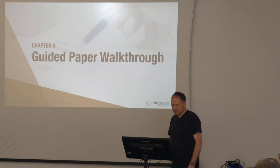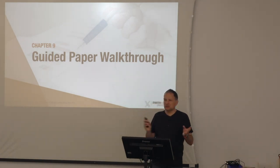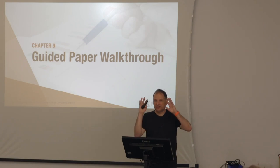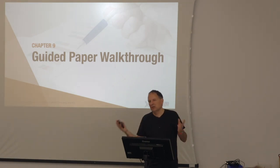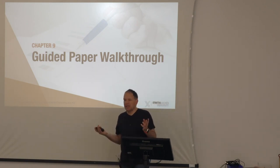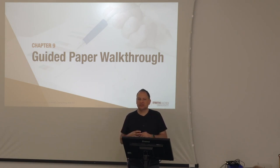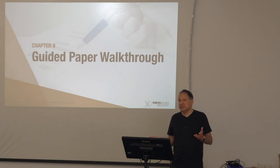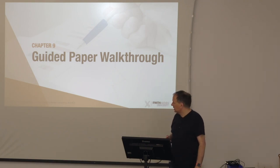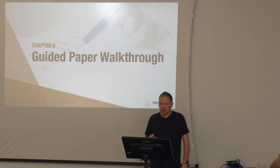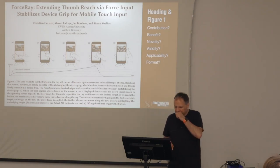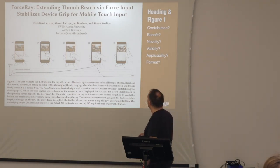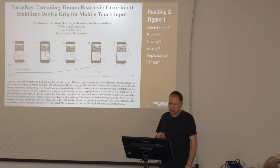Now we're going to take an example paper. Don't worry if you can't read all the small text — the goal is to give you a feel for the lay of the land when you go through a paper. This is a very typical paper in our field — maybe 8 to 12 double-column pages in fairly small print, so it's dense material. The example we're going to use is the ForceRay paper, published a couple of years ago on extending thumb reach via force input.